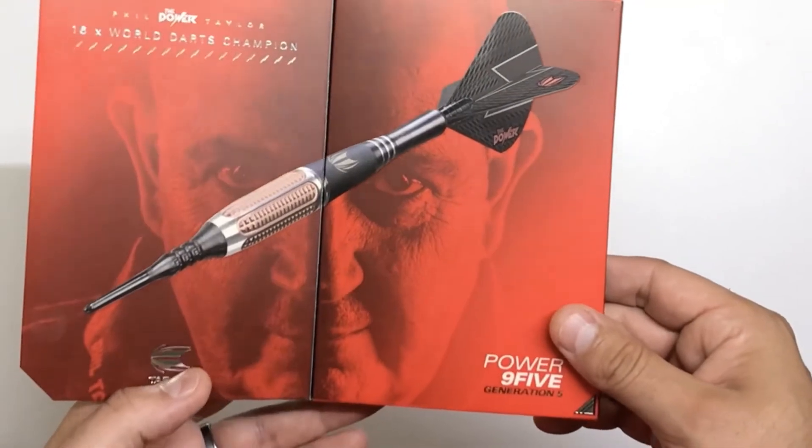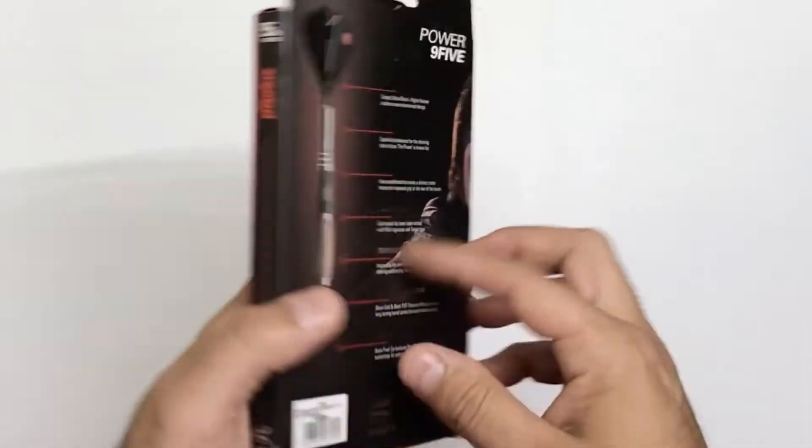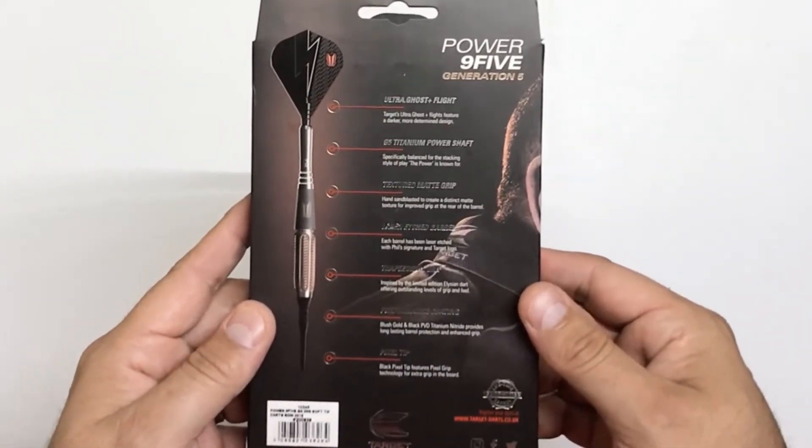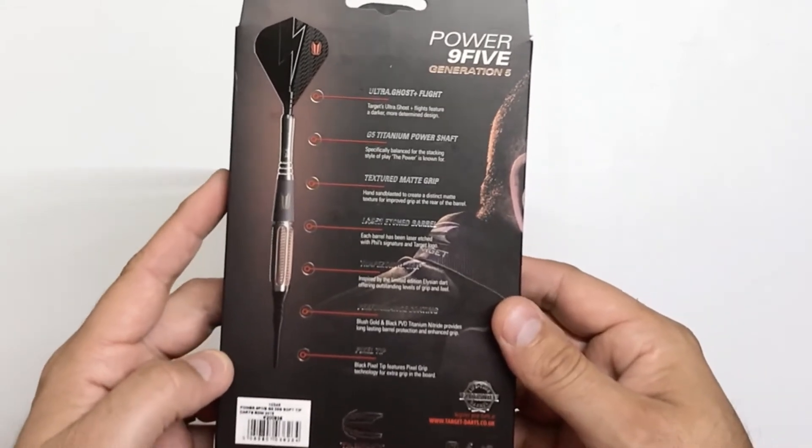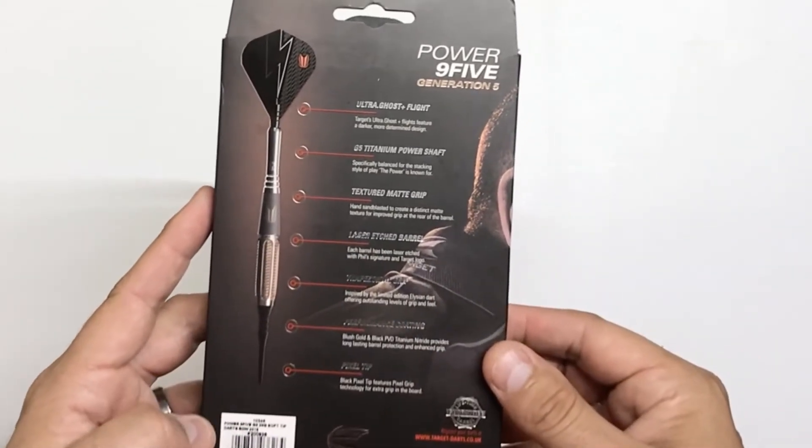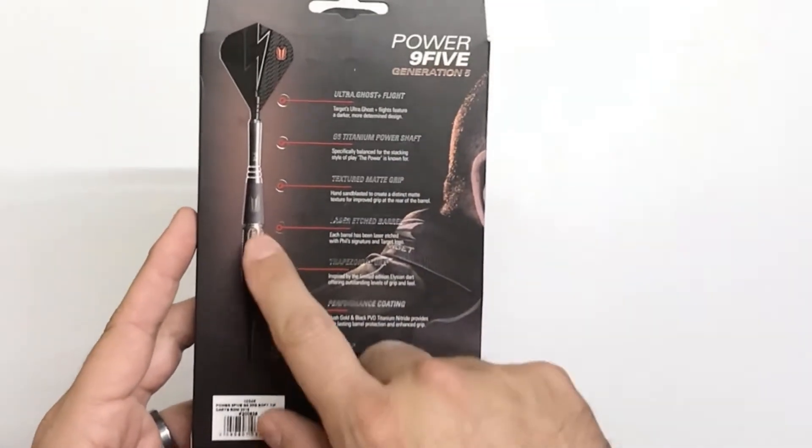95% tungsten barrel, ultra ghost flight, G5 titanium power shaft, textured grip with that sandblasted grip in the back there. Laser etched barrel, trapezoidal grip, kind of like the Raymond van Barneveld darts. Has a titanium nitrate coating on it and the pixel tip.